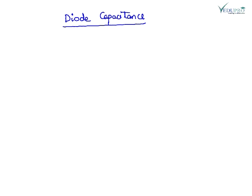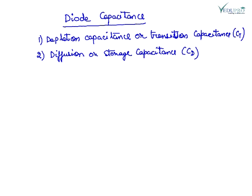Now we will see the diode capacitance. The two types of diode capacitance are depletion capacitance or transition capacitance CT, and diffusion or storage capacitance.